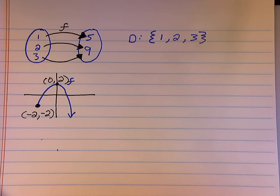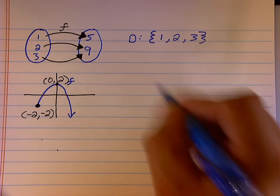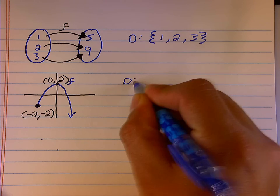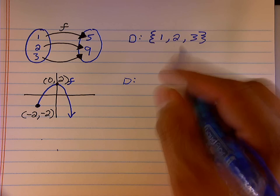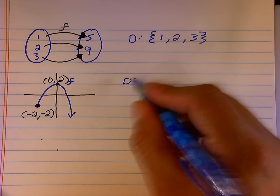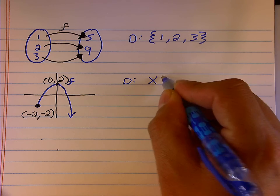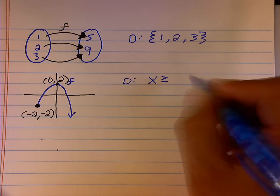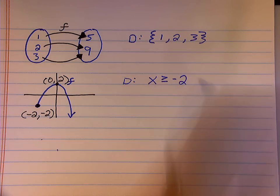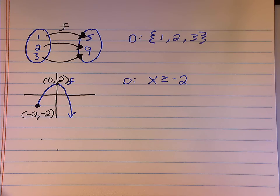A couple ways we can write this. The old inequality notation, which is a good place to start, is my domain is the set of x is going to be x greater than or equal to negative 2. I don't have to say less than infinity. Everything is less than infinity. It's not necessary. So we just state x is greater than or equal to negative 2.